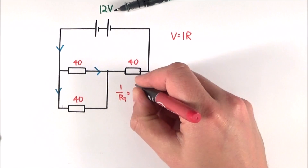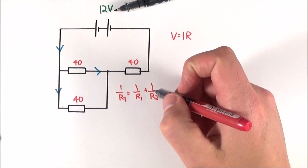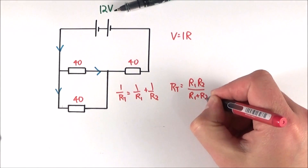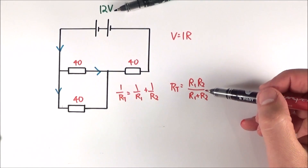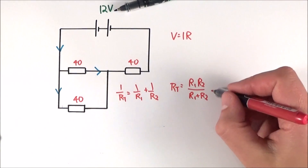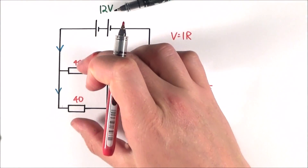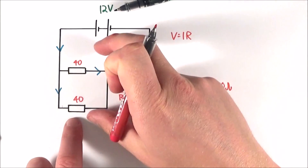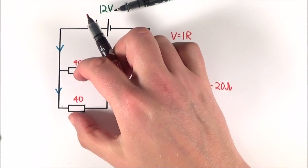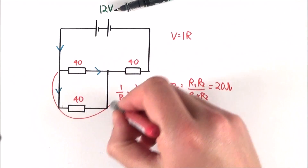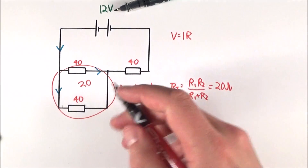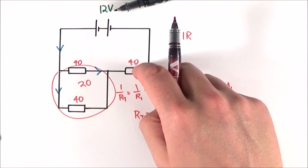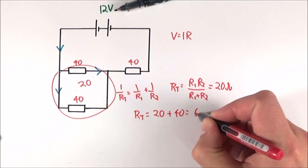Using 1 over RT equals 1 over R1 plus 1 over R2, or equivalently RT equals R1 times R2 over R1 plus R2, we get 40 times 40 equals 1600, divided by 80, giving a combined resistance of 20 ohms. That's expected — two equal resistors in parallel halve the overall resistance. Adding the 40 ohm series resistor gives a total resistance of 20 plus 40, which equals 60 ohms.